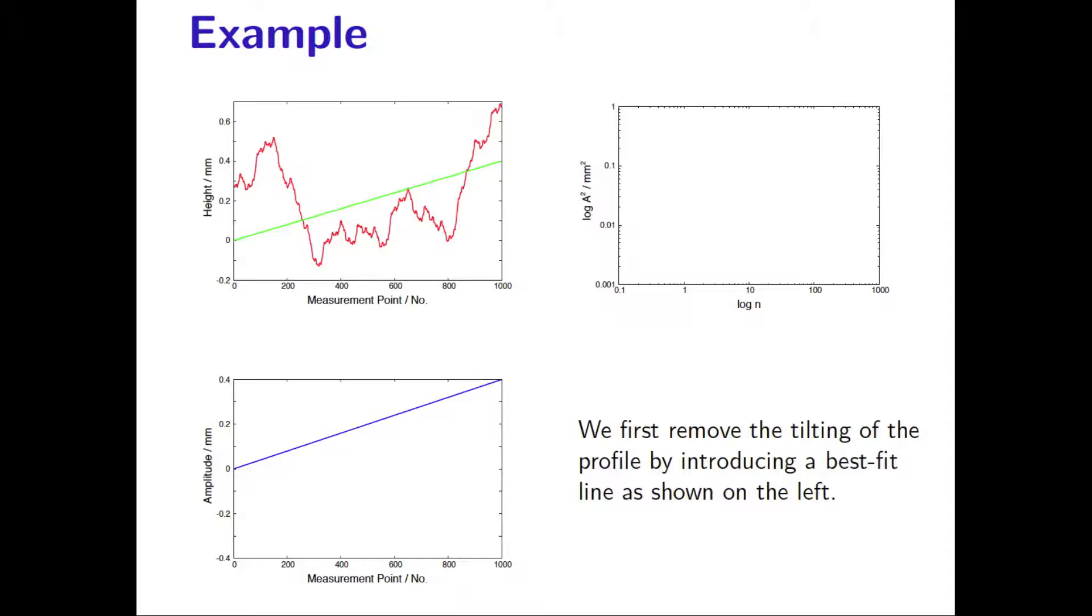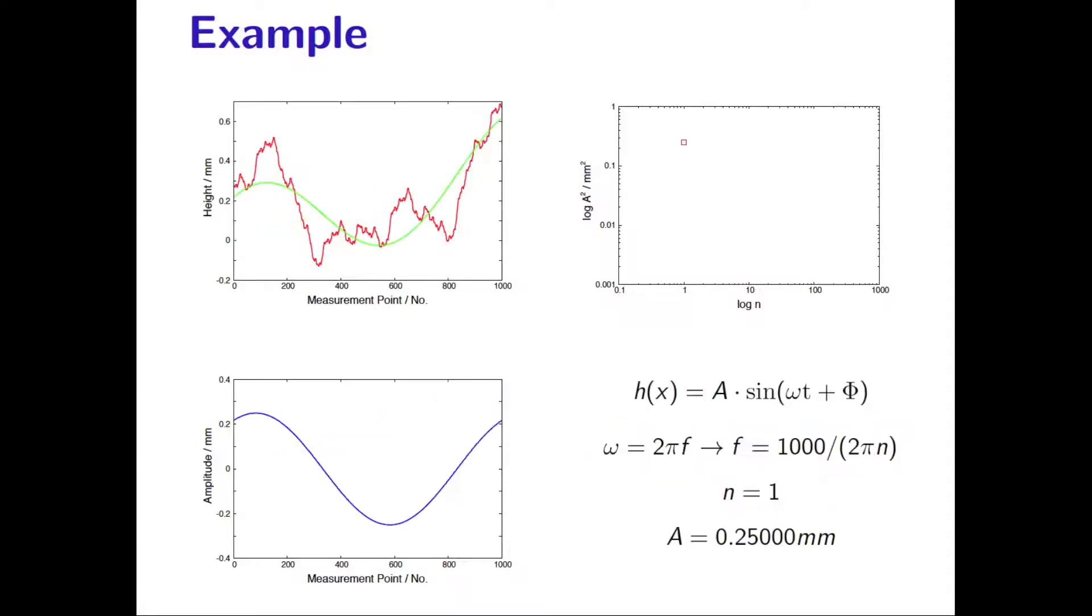After removing the tilting, we start the Fourier transformation by having one single sinus wave. This means that we fit a single sinus wave into the 1000 measurement points. The corresponding frequency is calculated by dividing the number of measurement points by 2 pi times the number of sinusoidal waves we want to fit.